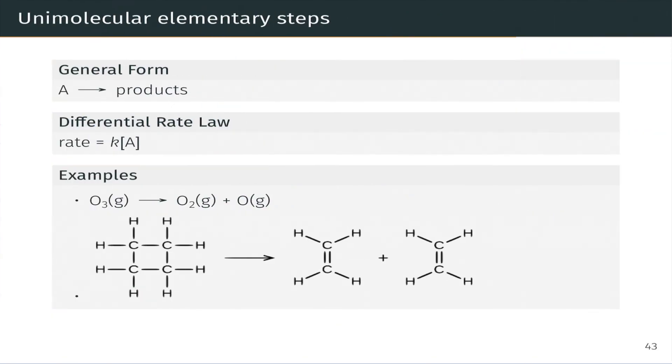Now what we're going to do is survey the possibilities for molecularity, starting with a unimolecular elementary step involving just one molecule of A forming products. We already know the differential rate law is K times the A concentration to the first power, since we know we're dealing with an elementary step here.